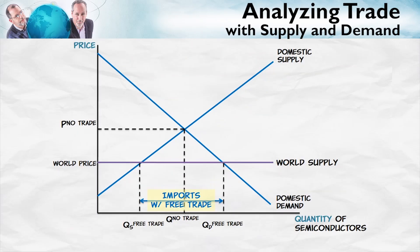Now let's do the same diagram but with a tax or a tariff. The quantity demanded with free trade and the quantity supplied with free trade — the difference between the quantity demanded and the quantity supplied domestically is, of course, imports. So this is imports with free trade, this distance right here.